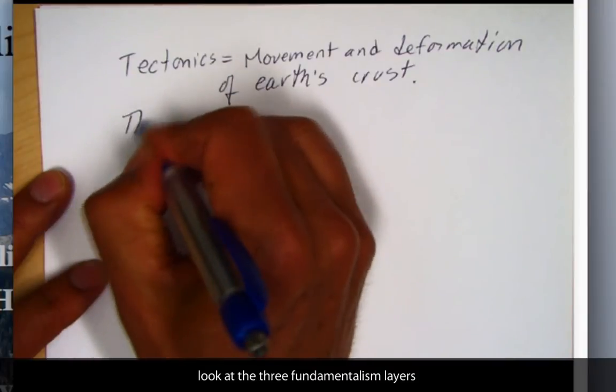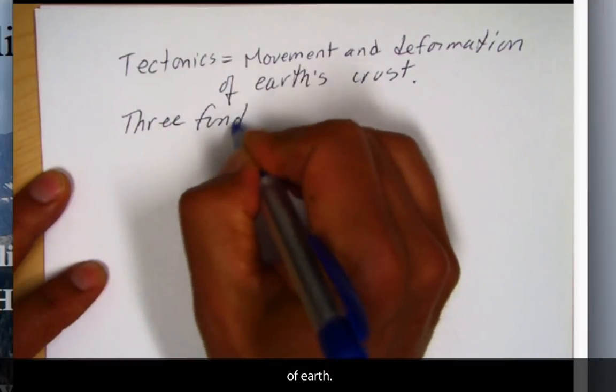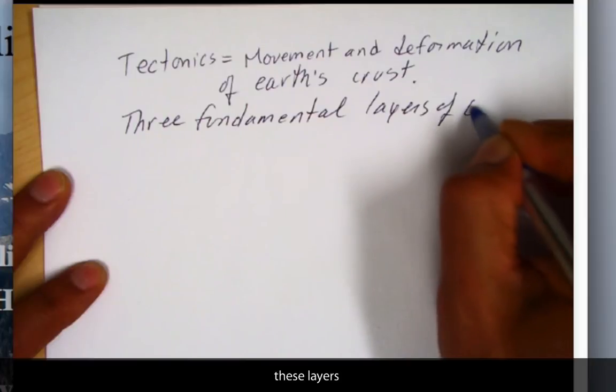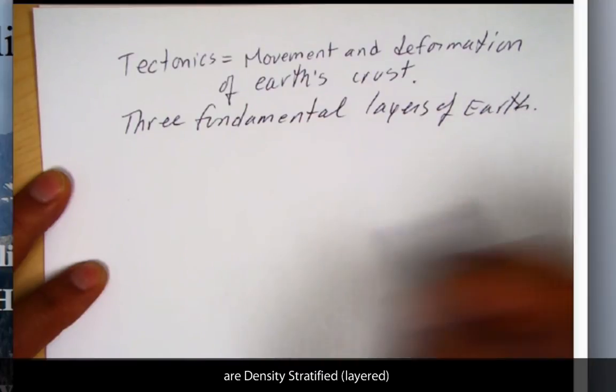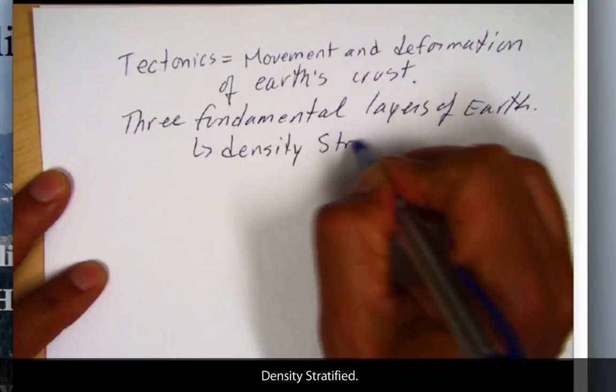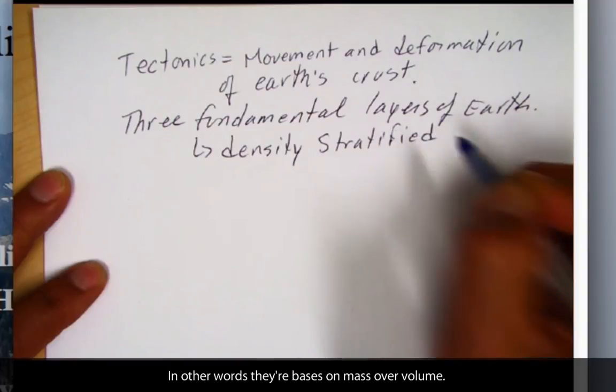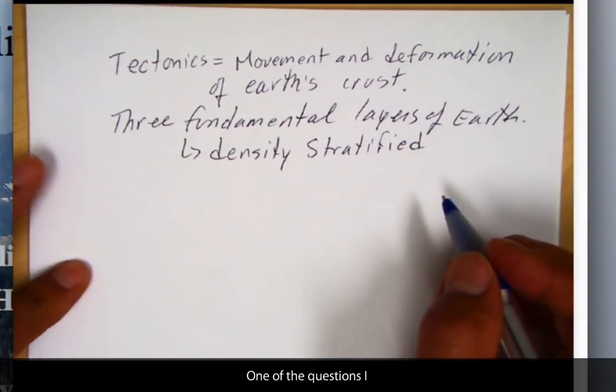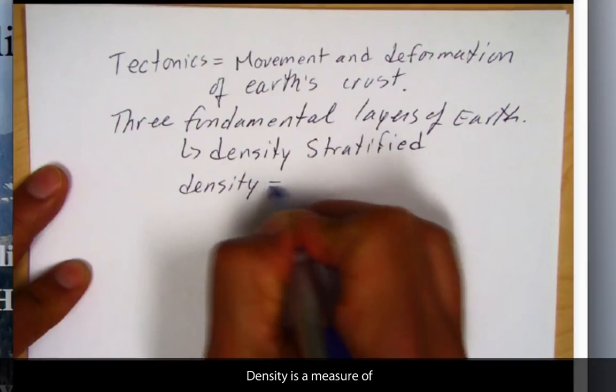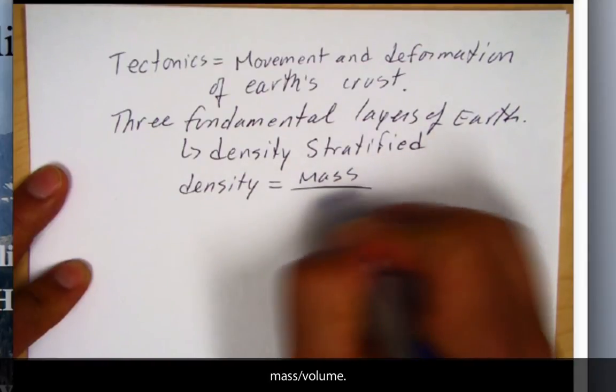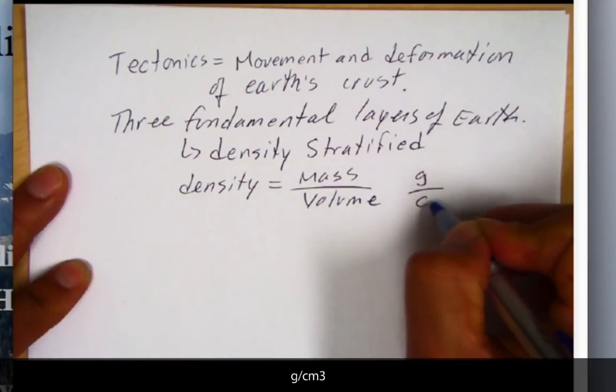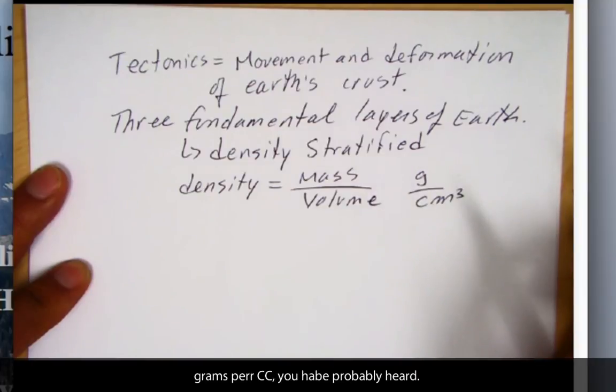If we take another step here, we're going to look at the three fundamental layers of Earth. These layers are basically density stratified. In other words, they're based on their mass over volume. So, one of the questions I often ask is, what is density? And density is a measure of mass over volume. And usually, the units we use are either grams per centimeters cubed. Grams per cc, you've probably heard.